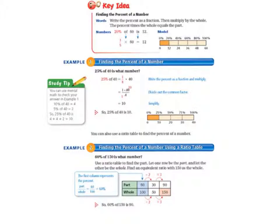Today we'll be starting on page 226 in your math textbook. The first thing you need to do is copy the key idea from the top of the page. Finding the percent of a number. We write the percent as a fraction and then we multiply by the whole. The percent times the whole equals the part.